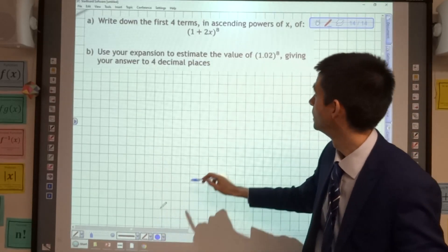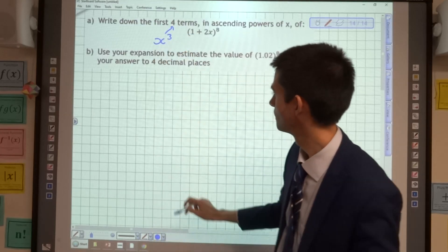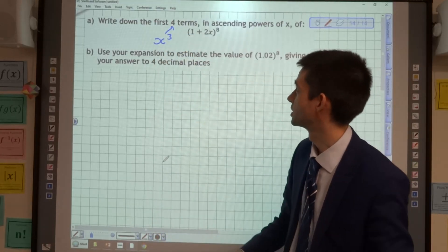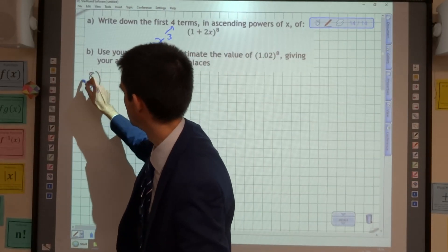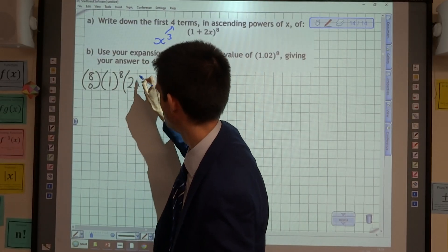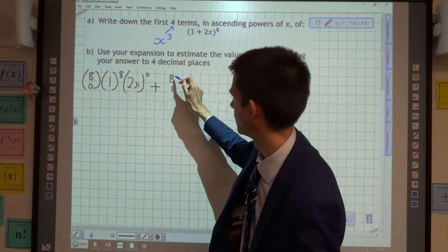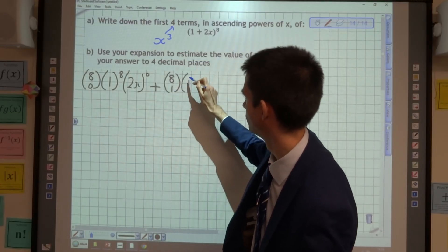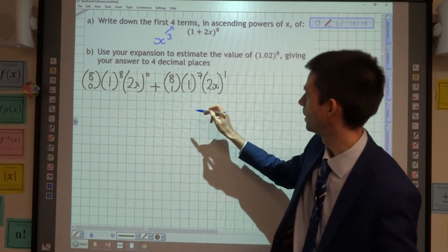So first of all, let's look at the first four terms. That's going to take us up to x cubed, with (1+2x)^8. So the first term is going to be 8 choose 0, 1^8, (2x)^0. Next term we're going to have 8 choose 1, 1^7, (2x)^1.